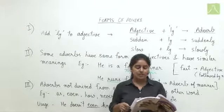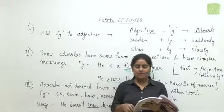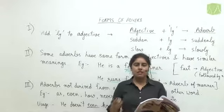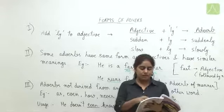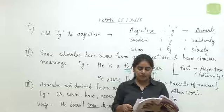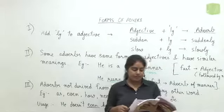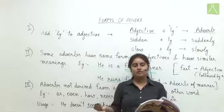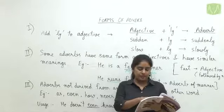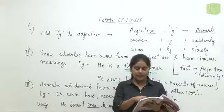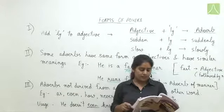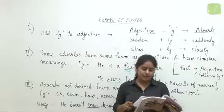Question seven: 'Everything happened so ___ we had to move to California in less than a month.' The second part tells us we had to move in less than a month — something happened very suddenly. So the correct answer is option D — 'suddenly.' Question eight: 'Why does he always have to walk so ___? You can hear him in the next room.' If you can hear him in the next room, he is walking noisily. 'Loudly' is the right answer — option D.